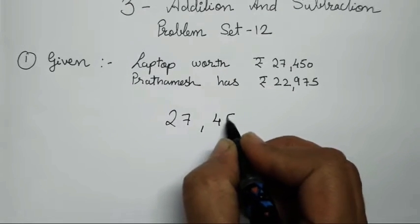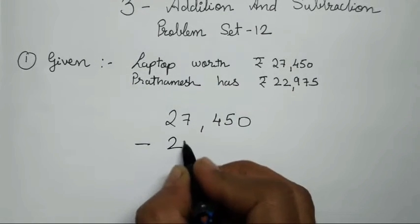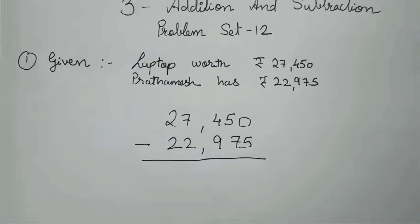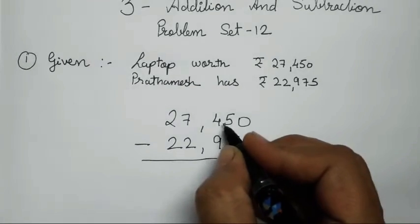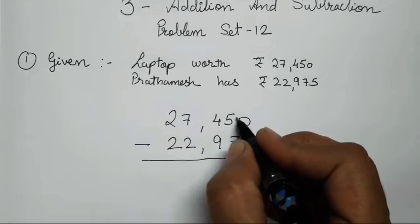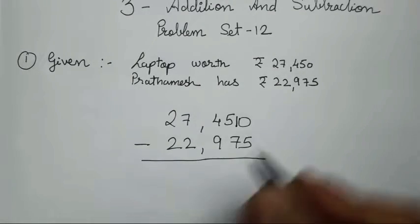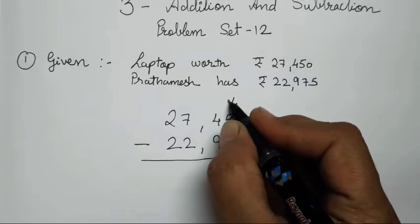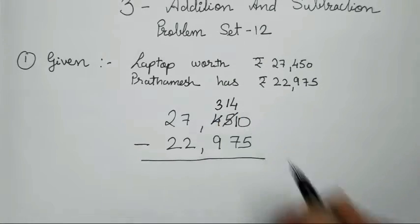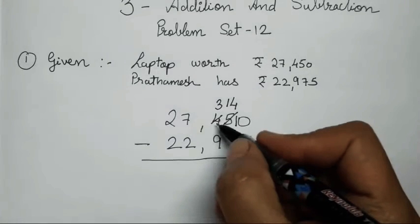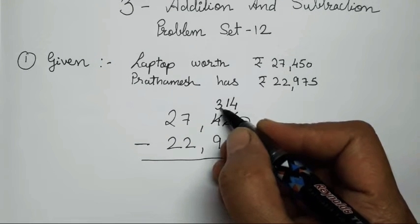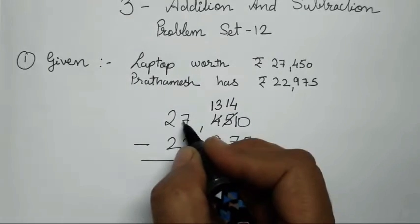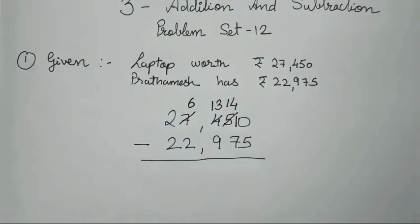27,450 minus 22,975. Now for the subtraction, we do it the same way we have been doing it. We carry one from five, so it becomes ten; five becomes four. We cannot subtract four and seven, so we borrow one from four — four becomes three. We cannot subtract three and nine, so we borrow one from seven — seven becomes six.